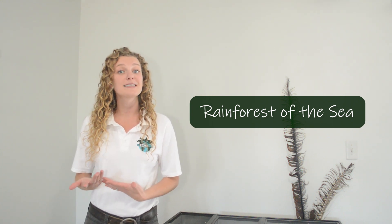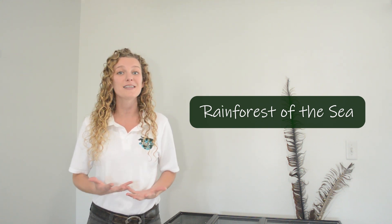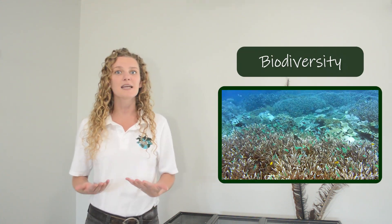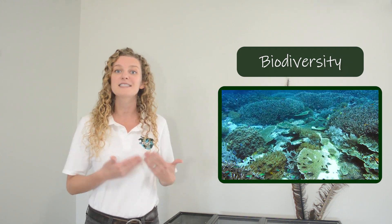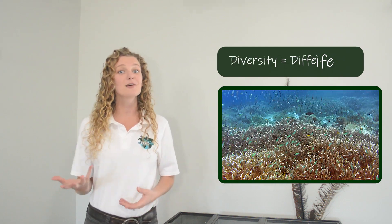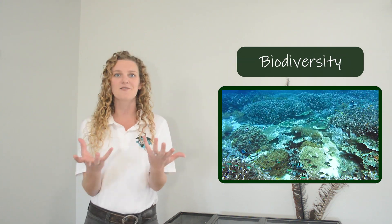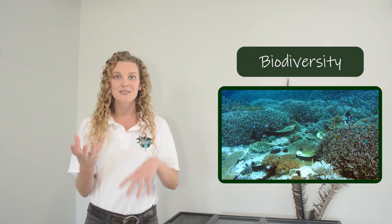Like a rainforest on land, there's lots of food and lots of hiding places, so tons of animals call this ecosystem home. Both coral reefs and rainforests have high biodiversity, which means there are lots of different types of organisms that live there. Bio means life or living things, diversity means different types of things. Scientists estimate that one quarter of all ocean animals call coral reefs home at some point during their lives.